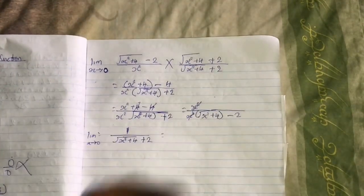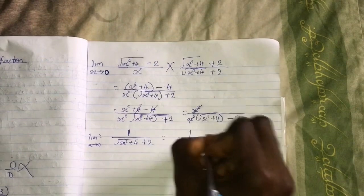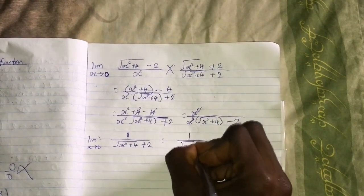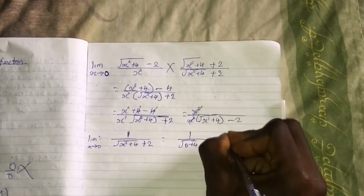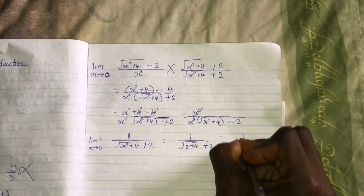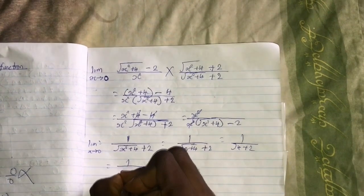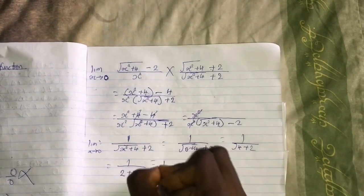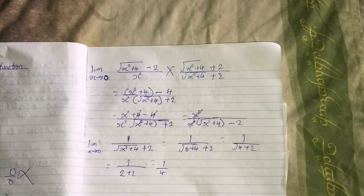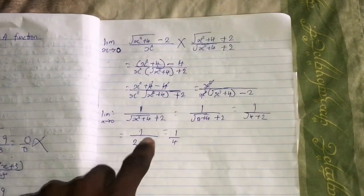Oh sorry, this is plus, my bad. So once we limit x to zero we have 1/(sqrt(0 + 4) + 2), that is 1/(sqrt(4) + 2). And we all know that sqrt(4) is 2, that is 2 + 2, therefore our answer is 1/4. This is our final answer.